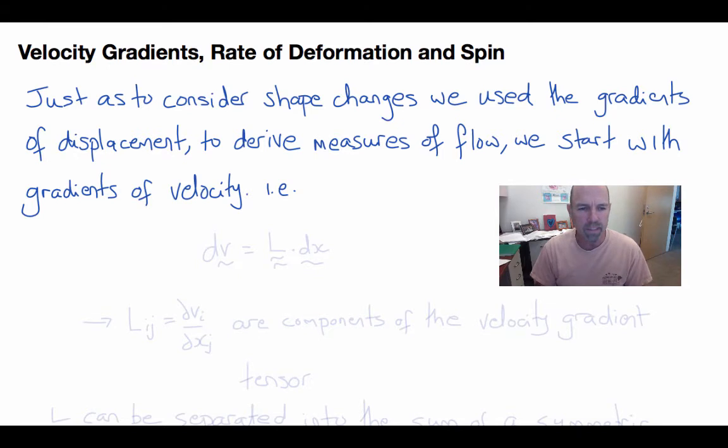Now we can consider an element of a velocity vector dv related to an element of a position vector dx through a tensor L, and the components of that tensor from the chain rule of calculus would be del vi del xj. And this tensor L is called the velocity gradient tensor.